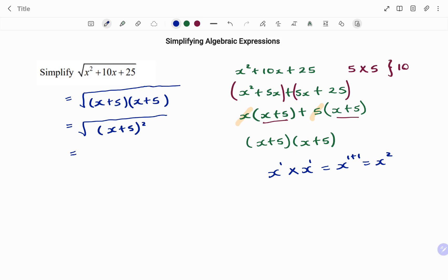Changing my root sign to radical form, I have x plus 5 all squared, all raised to the power of one half.